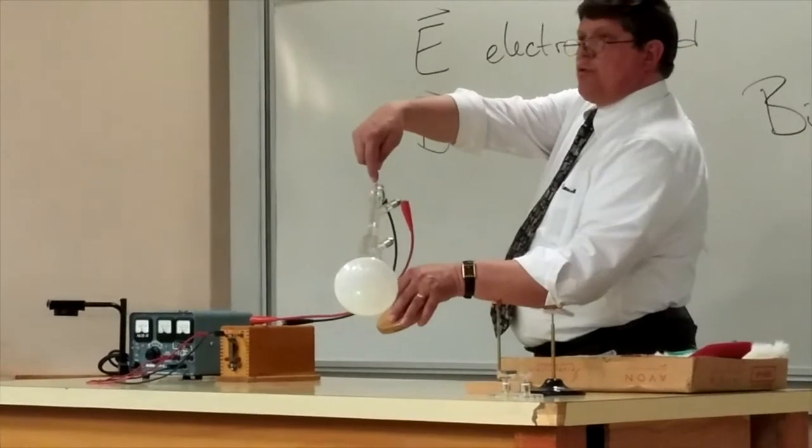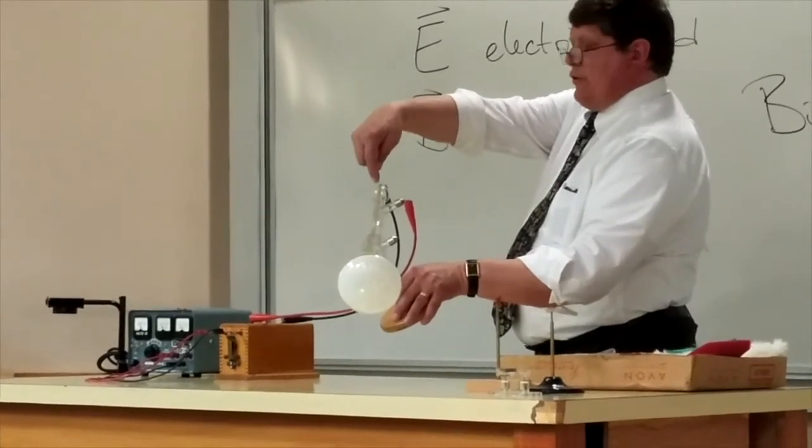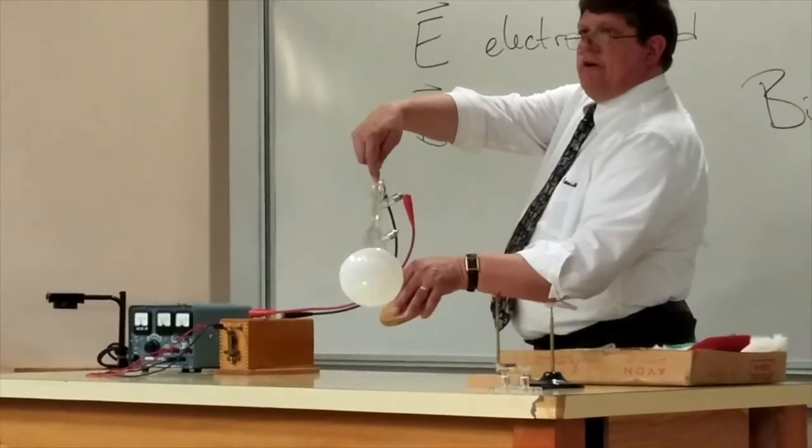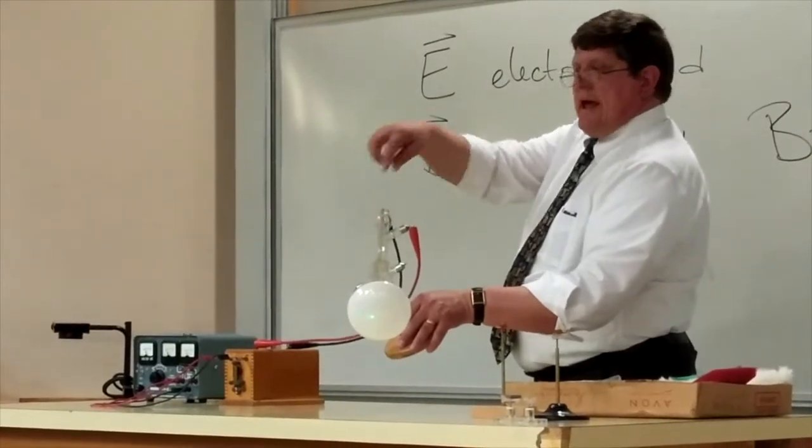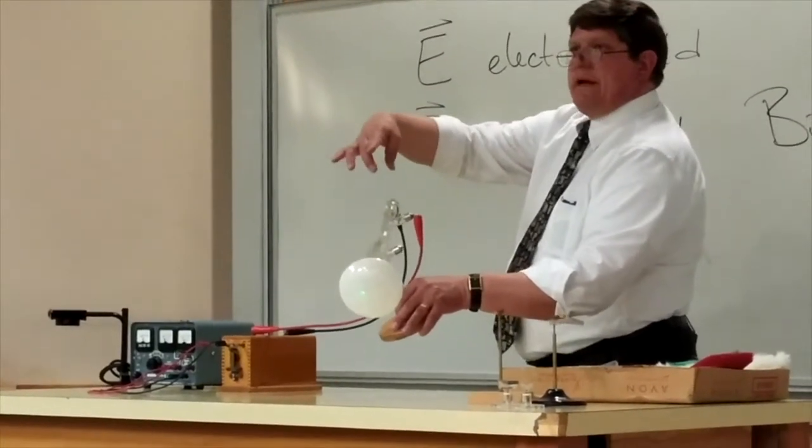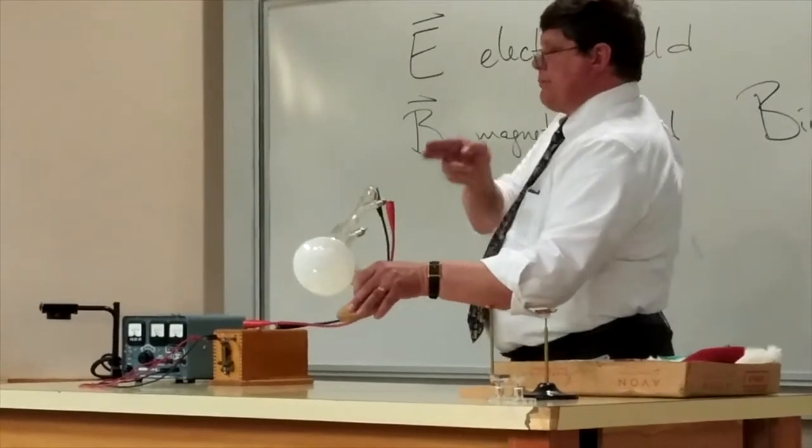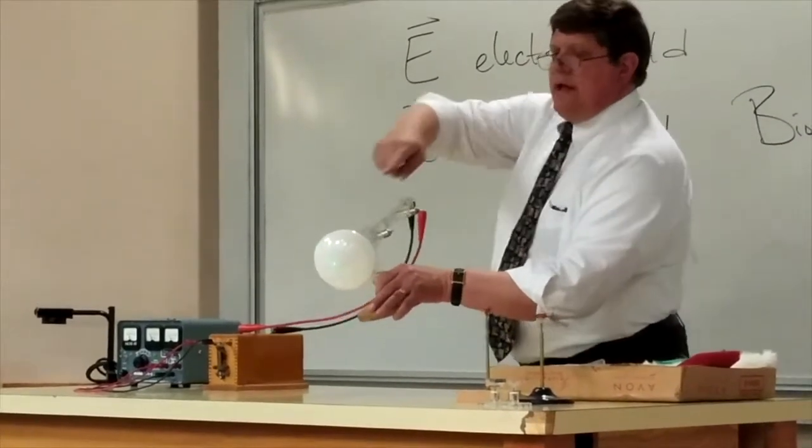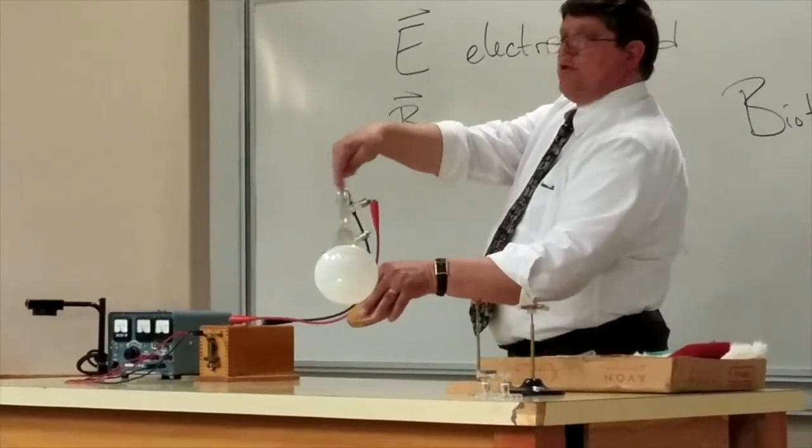And then up towards you in the living room, there was a positive terminal called an anode. And if you get the voltage between those big enough, you can actually rip electrons off the cathode and have them sent towards the anode.